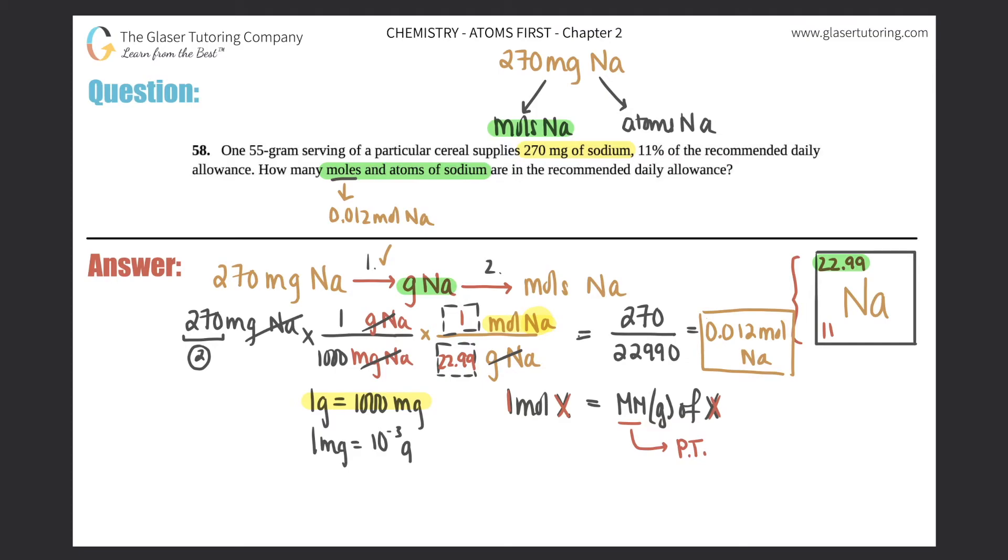Now what I'm going to do is I'm going to figure out how to get to atoms. But remember, the quickest way is actually your conversion between moles of sodium to atoms of sodium. This would only be a one step conversion. Why you may ask? Because you guys should know the conversion between moles to atoms.